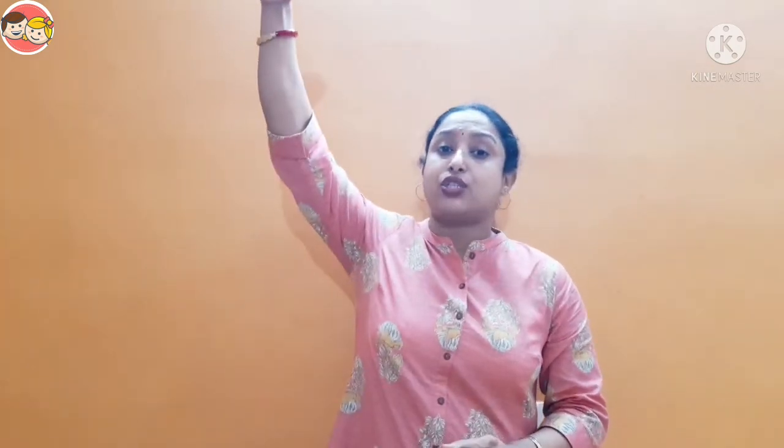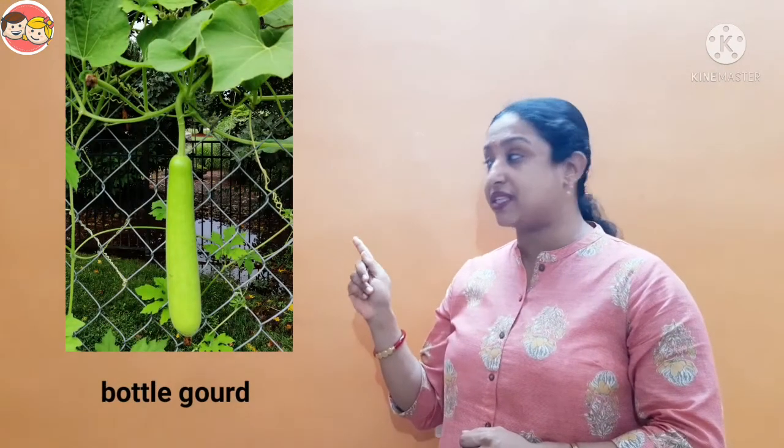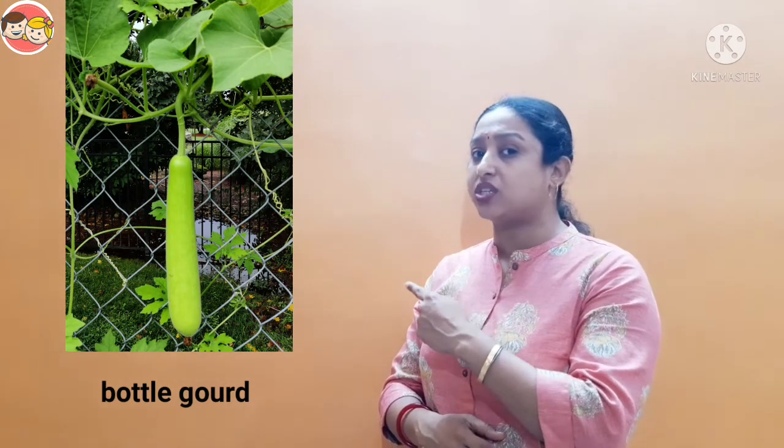So tomato and brinjal are not green vegetables — they are colorful vegetables. Tomato is red in color and brinjal is purple in color. Now we are going to learn about a new type: gourd family vegetables. Gourd family vegetables have hard skin and they don't grow on tall, strong trees — they grow on creeper plants, like bottle gourd, which means lauki. It looks like a bottle, that's why its name is bottle gourd.